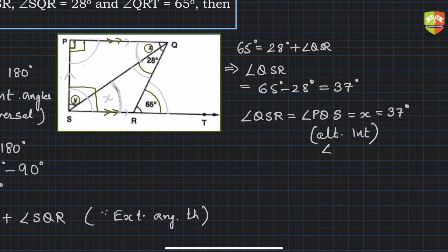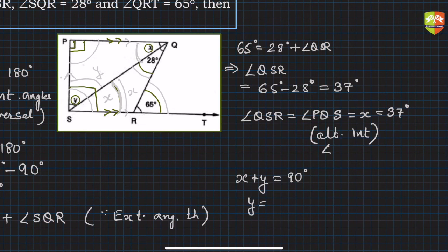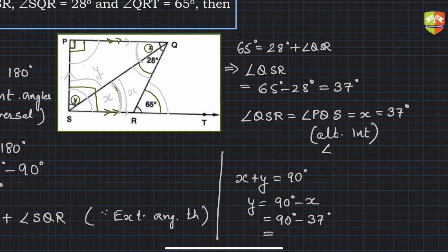From the figure, x plus y equals 90 degrees. Since x is 37 degrees, y equals 90 degrees minus 37 degrees, which gives 53 degrees.